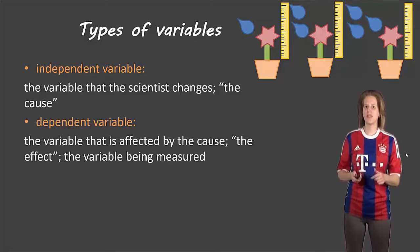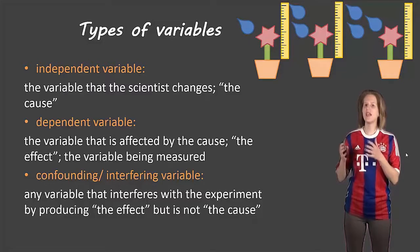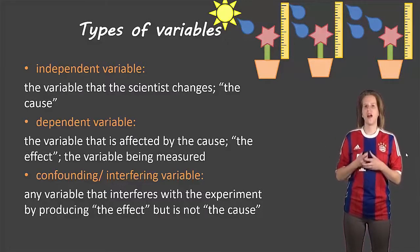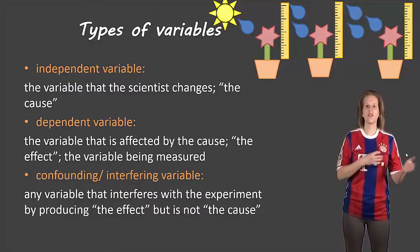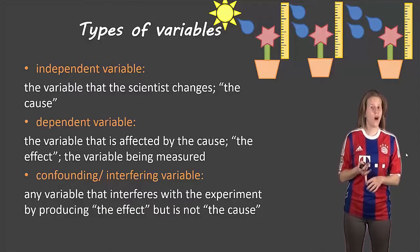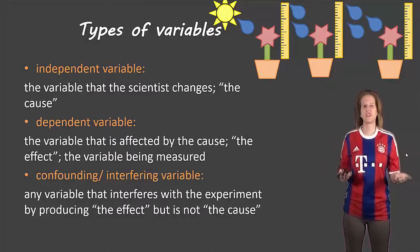The last type of variable — one that some students tend to forget about — is called the confounding variable, or sometimes it's known as the interfering variable. These are things that will have an effect on what we're measuring, but isn't due to the cause that we're actually looking for. Our independent variable will cause a certain effect, but these things will also cause that effect, and they're not what we're interested in studying. For example, if our plants are outside and some get more direct sunlight while others are in shade, at the end of the day when we're measuring their height, we don't know if that's because of the amount of water they got or the amount of sunlight. So an interfering or confounding variable screws up our experiment, and we usually have to control for those variables.